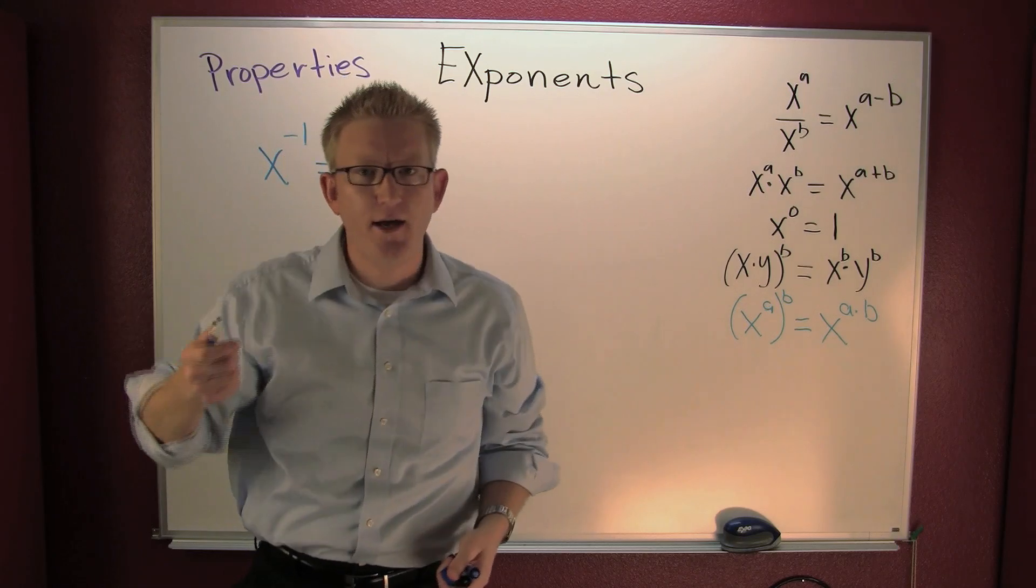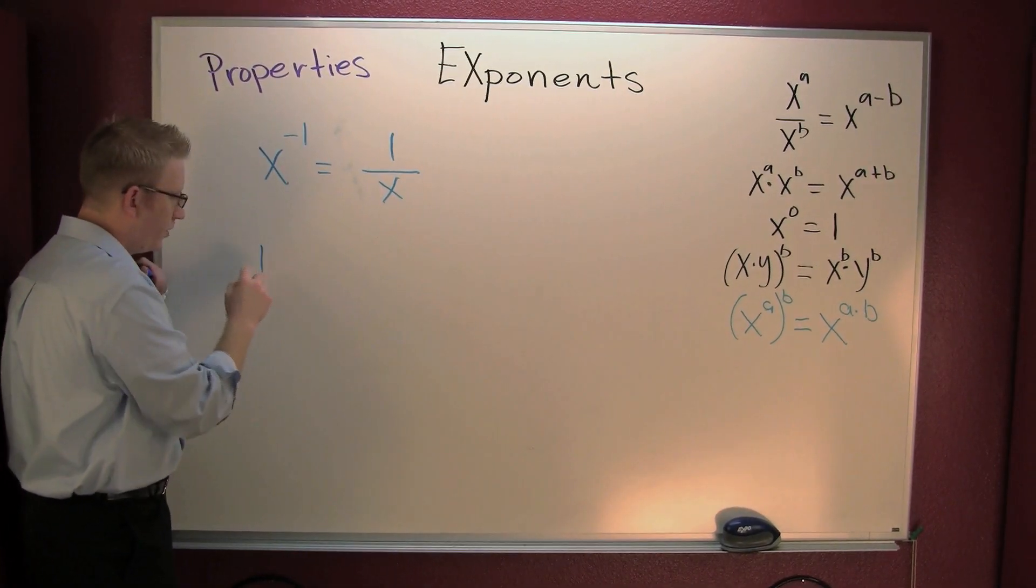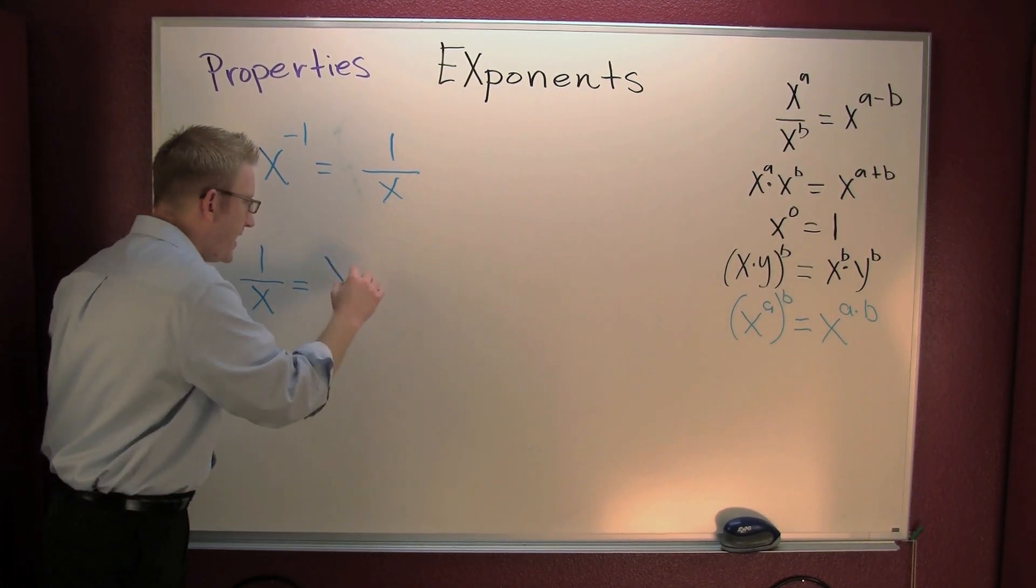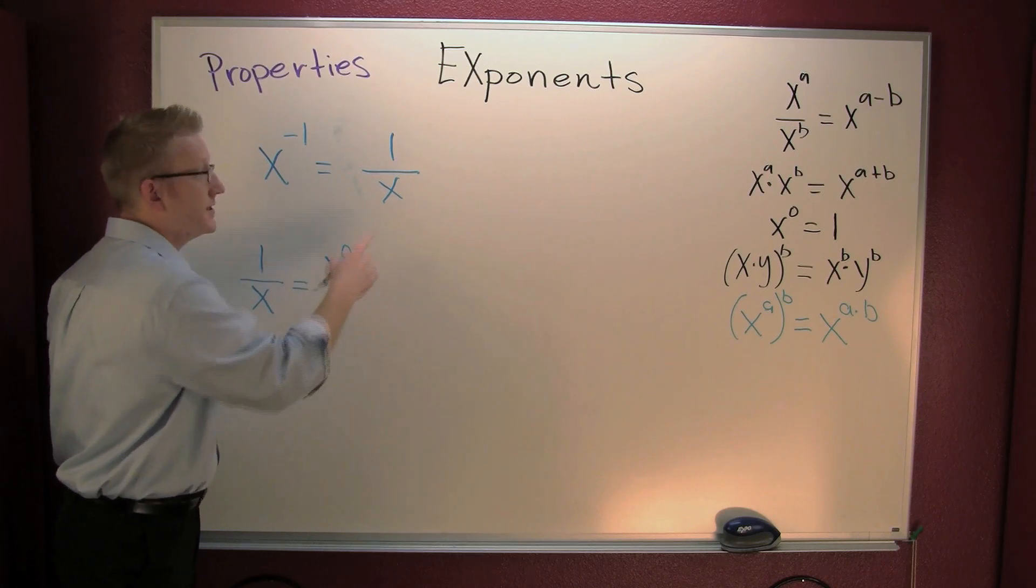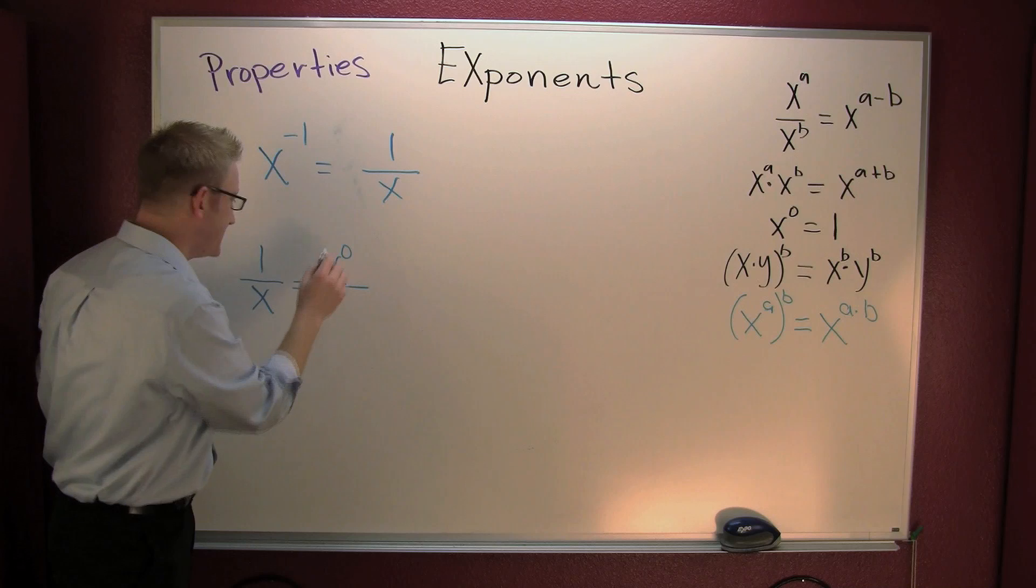The beans are cool, and here's why. If I take a look at this guy, one over x, I could rewrite that as x to the zero. What's x to the zero? Oh, it's one. Fun. X to the zero over x.